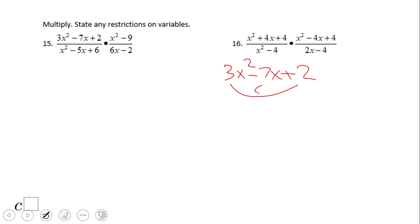3 times 2 is 6. So we're looking for two numbers whose product is 6, the sum is negative 7, and that will be negative 6 and negative 1.